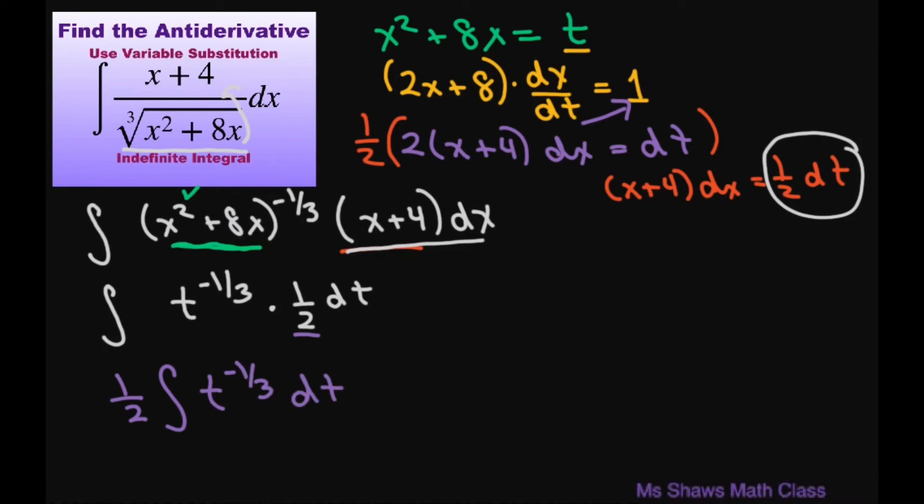Let's integrate. And when we integrate, we're going to get one-half times, and for this piece, you're adding 1. So that's going to give you a t to the power of two-thirds divided by two-thirds. And then you'll have plus c.